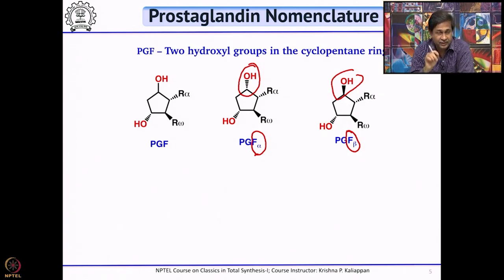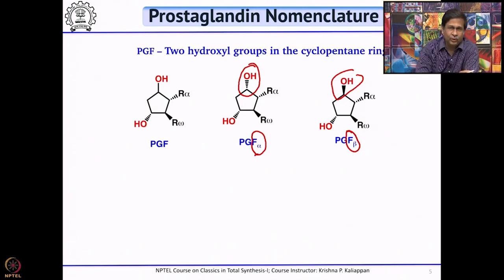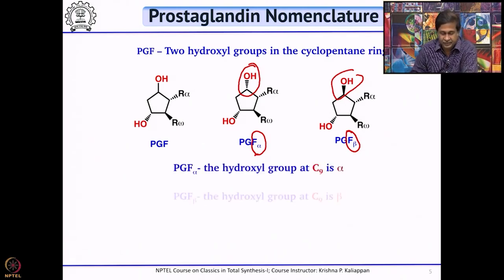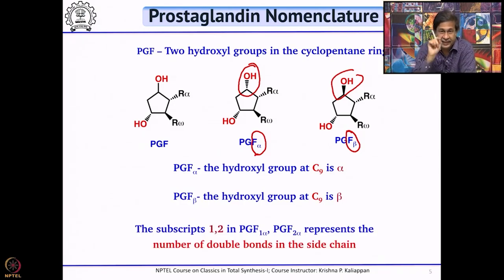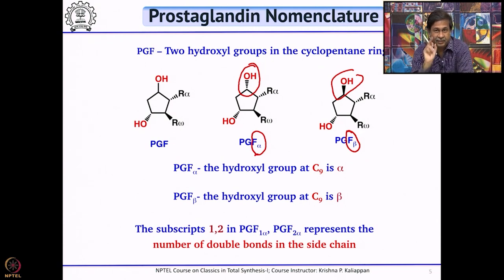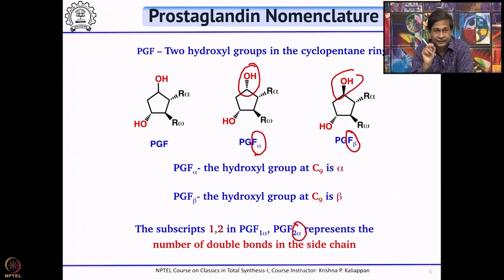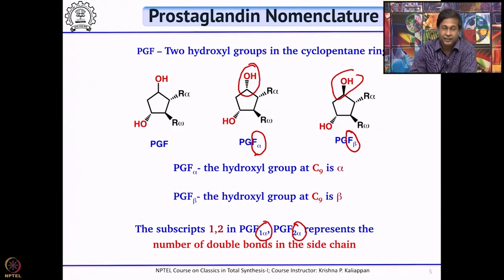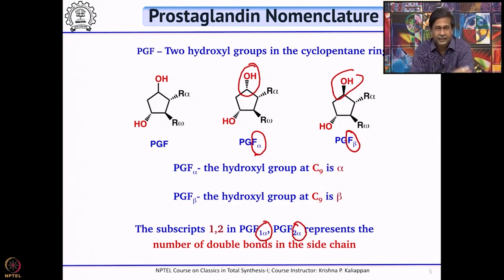You also see PGF1 alpha and PGF2 alpha. What does the 1 or 2 mean? That depends on the number of double bonds present in the side chain. If they write 2 alpha, that means the side chains have 2 double bonds. If they write 1 alpha, that means it has only 1 double bond in the side chain. This is the nomenclature of prostaglandins.